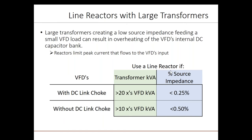It's common that a VFD may be powered by a transformer that is significantly higher in power rating. A large transformer appears as a low impedance source to the VFD, which can cause overheating of the internal DC capacitor bank. The larger the transformer, the lower the impedance will be relative to the size of the VFD. As a rule of thumb, use a line reactor if the drive does not have a DC-link choke and the transformer supplying the drive is larger than 10 times the VFD's equivalent KVA rating. If the VFD does have a DC-link choke, consider adding a line reactor if the transformer's KVA is greater than 20 times the VFD's equivalent KVA rating.